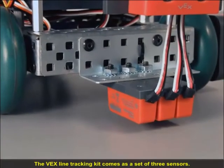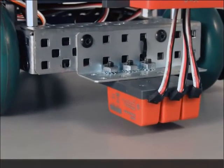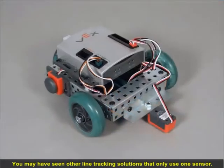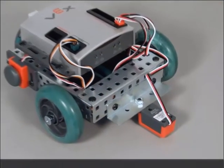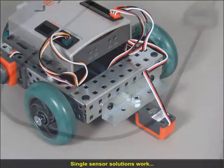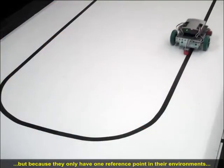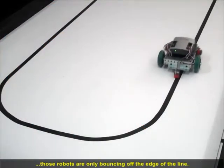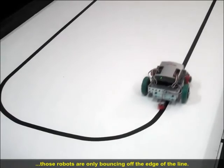The VEX line tracking kit comes as a set of three sensors. You may have seen other line tracking solutions that only used one sensor. Single sensor solutions work, but because they only have one reference point in their environment, those robots are actually only bouncing along the edge of the line.